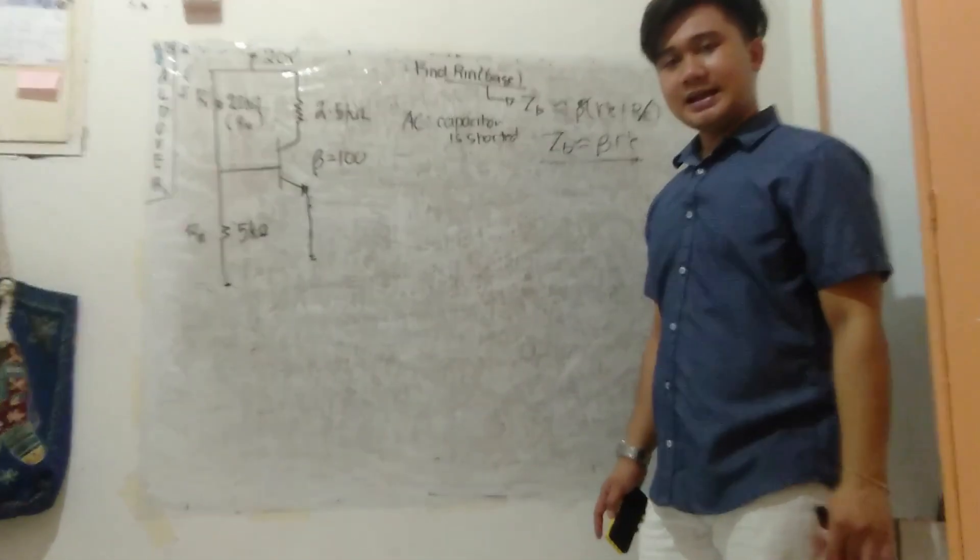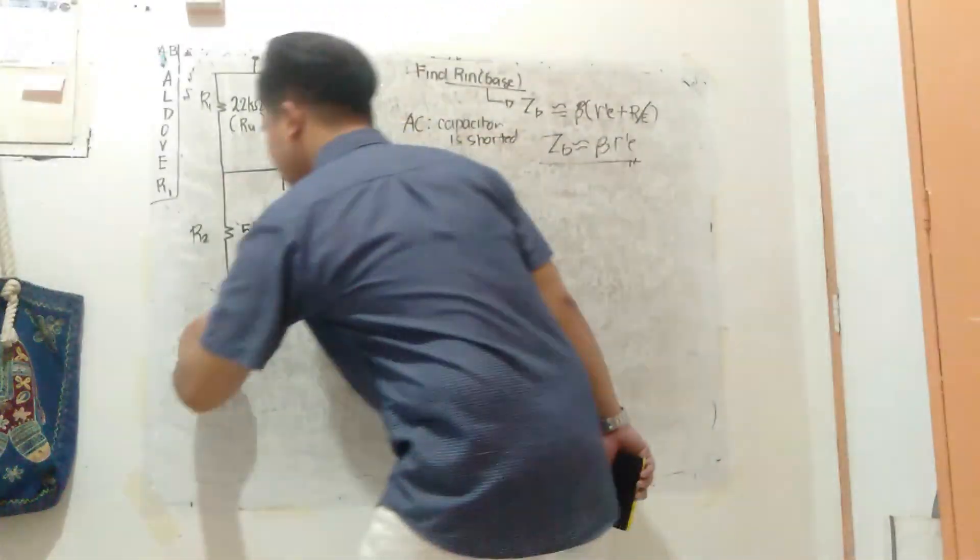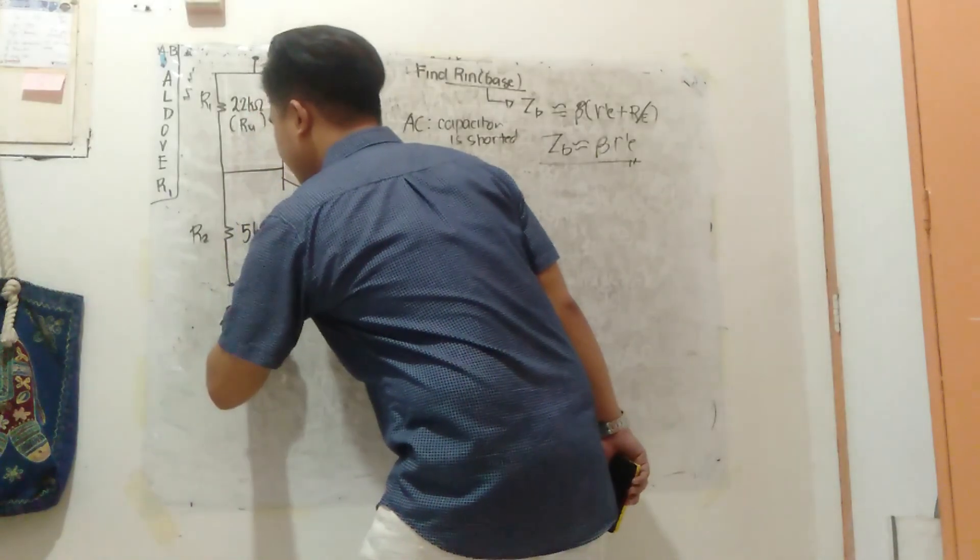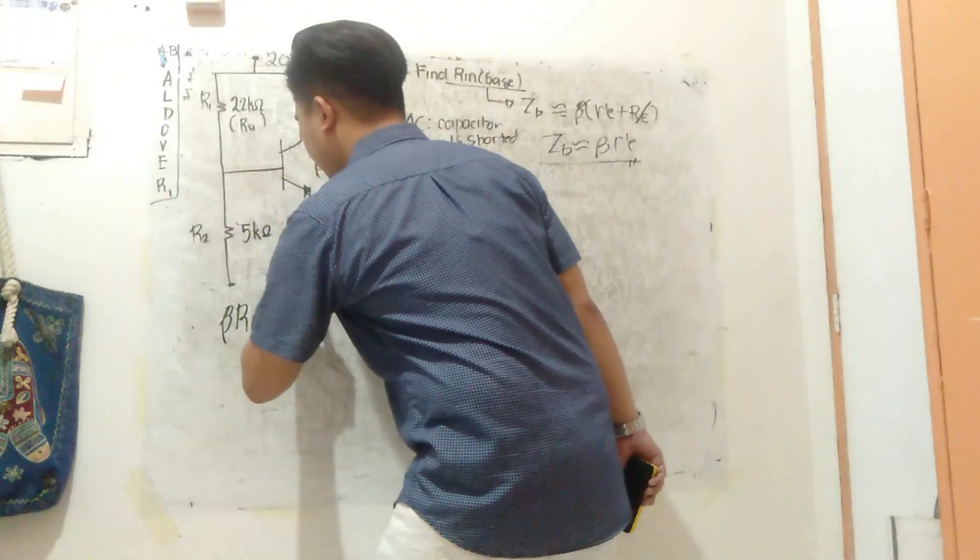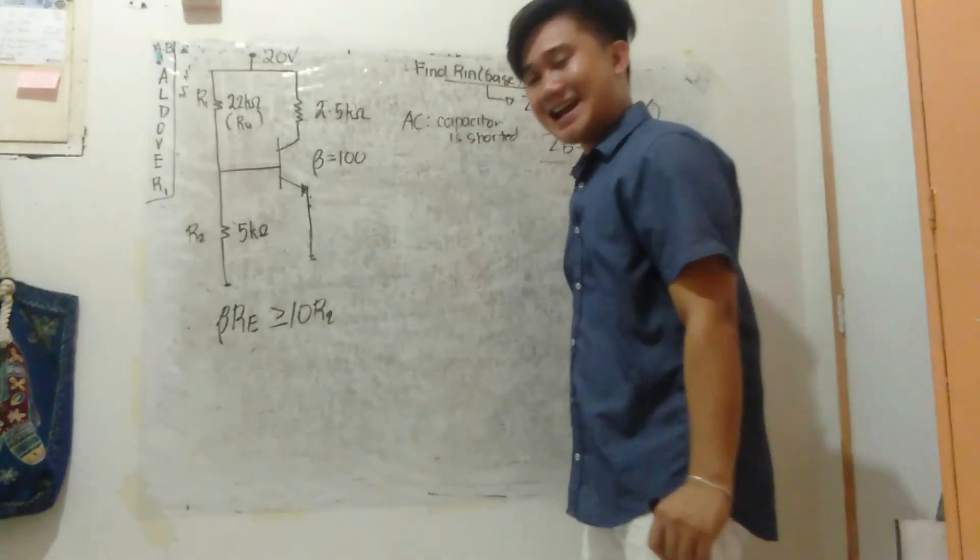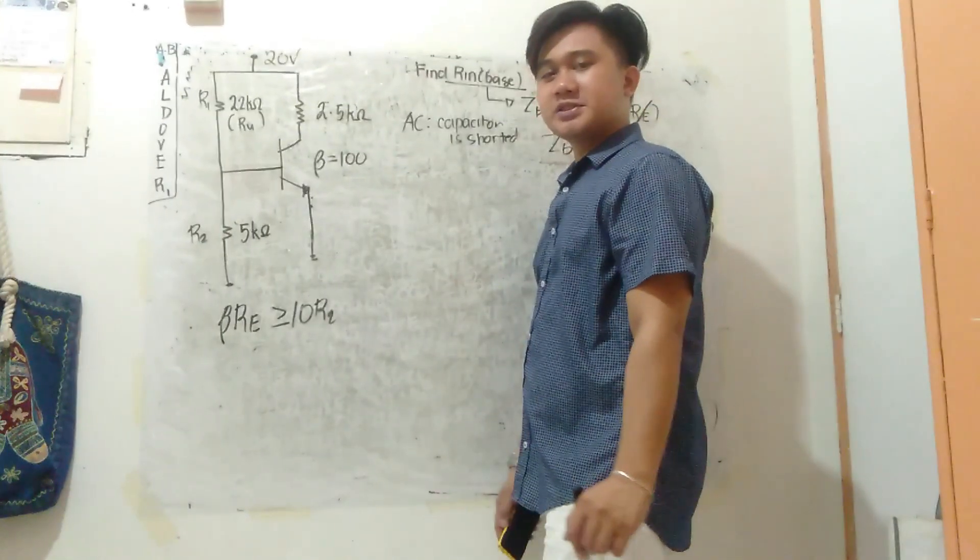So I'll do approximate analysis. For approximate analysis, which one is that? I start with the condition: beta R'e, is it greater than or equal to 10 R2? If I satisfy this, I can use approximate analysis. Many in engineering use approximate analysis.